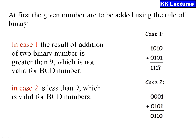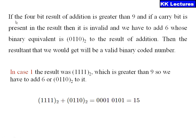Now, what we need to do to get a valid output: if the four-bit result of addition is greater than nine, or if a carry bit is present in the result, then it is invalid and we have to add six to the binary result so that the answer will be a valid BCD code. In case one, the result was 1111, which is greater than nine, so we add six to it.